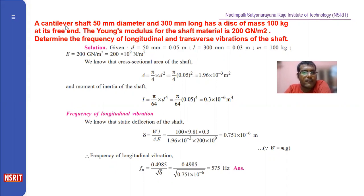A cantilever shaft 50mm diameter, they are given a diameter of 50mm and 300mm long, that means lambda. Convert into 0.3 meters. Has a disc of mass 100 kg, mass is 100 kg.